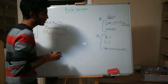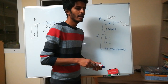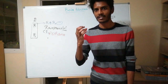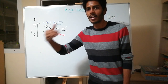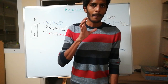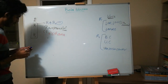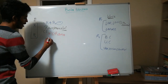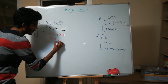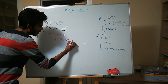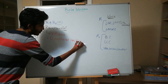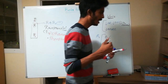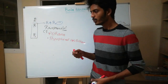Where else should we not use propranolol? Vasoconstriction — if you constrict a blood vessel supplying an organ, that will decrease the blood supply. Propranolol causes vasoconstriction, so if used in a patient with peripheral vascular diseases, that will be a problem. Therefore propranolol is contraindicated in peripheral vascular disease.